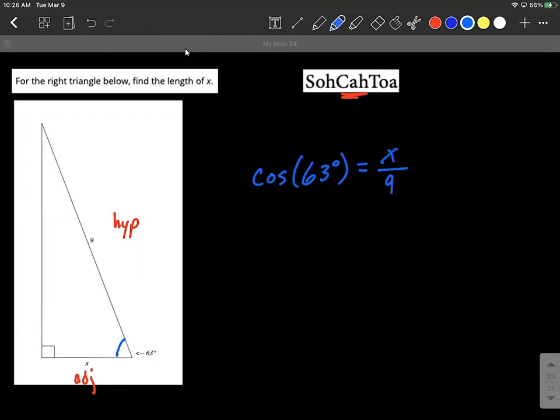To get x on one side by itself, we'll multiply both sides by 9. With a little canceling out on the right hand side, x will be all by itself, so 9 times the cosine of 63 degrees.